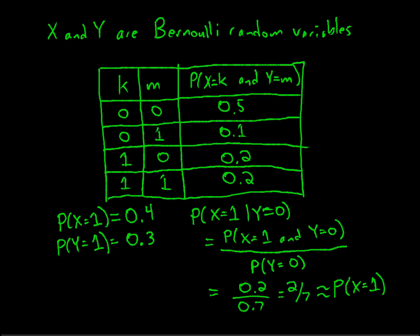Oh, that should not have been a quick equals. That should be a not equals to. So because the probability that X is 1 given that Y is equal to 0 is not the same as just the probability that X is 1, that means that these two random variables are not independent.